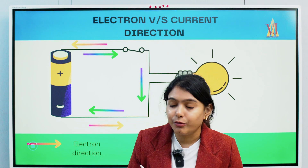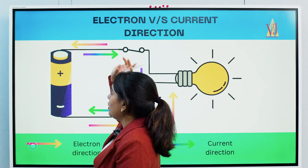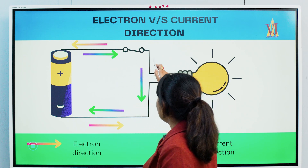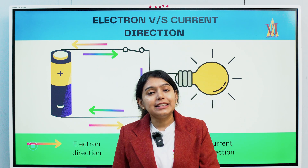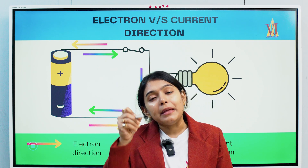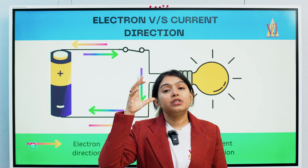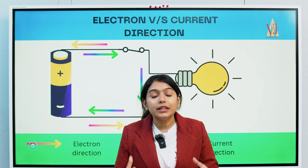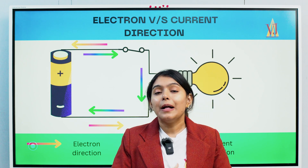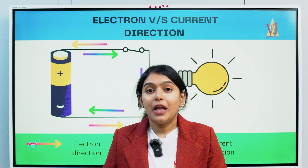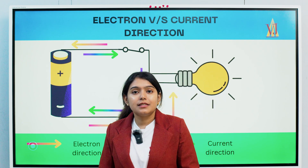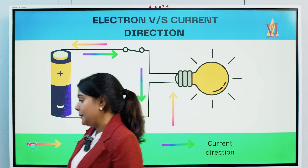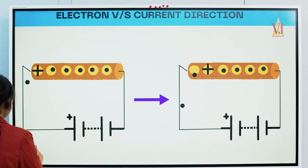Before the discovery of electrons — before understanding that current was due to free electrons — the direction of current was declared to flow from the positive terminal of the battery to the negative terminal. After that, they found out that the particle behind current electricity is actually the electron. So on what basis was the direction of current originally declared? Let us see.